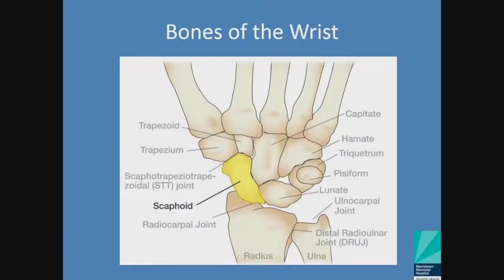Bones of the wrist: we divide these into distal and proximal carpal rows. Distal carpal row — trapezium directly under the thumb metacarpal, trapezoid under the index finger metacarpal, capitate under the long finger metacarpal, and the hamate under the ring and small finger metacarpals. The scaphoid, lunate and triquetrum form your proximal carpal row. The pisiform is a small pebble on the volar or palmar aspect of your triquetrum. The radius meets the scaphoid and lunate to form the radiocarpal joint, and your ulna is directed at the ulnocarpal articulation.